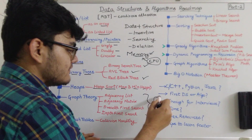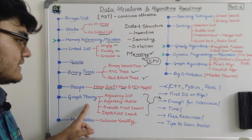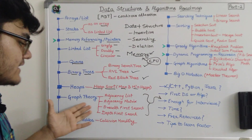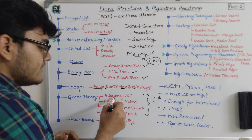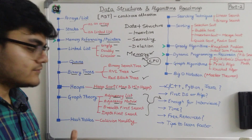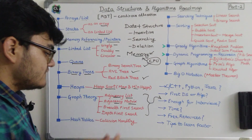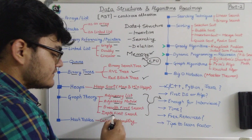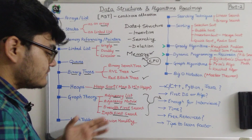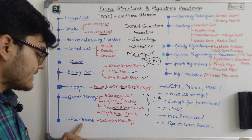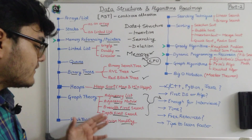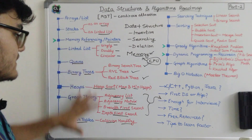Then comes graph theory, which is really important for interviews, and also because certain algorithms are applied to graphs as well. We have adjacency list and adjacency matrix to represent a graph data structure. Then we have searching techniques: breadth-first search, commonly known as BFS, and depth-first search, which is DFS. The last one is hash tables, where you need to understand a concept known as collision handling.